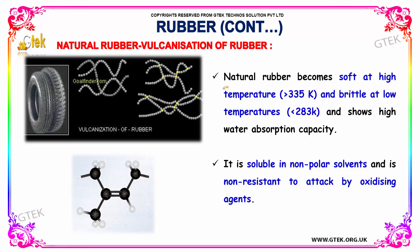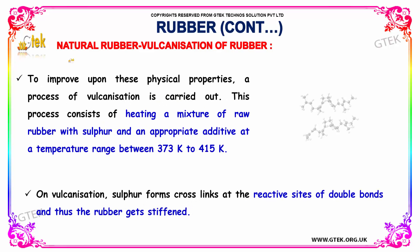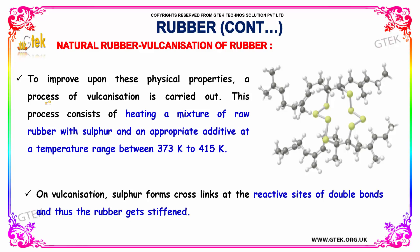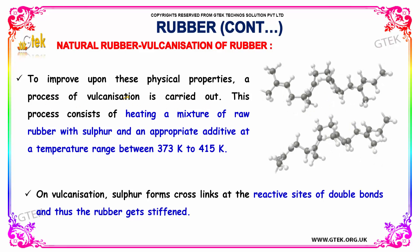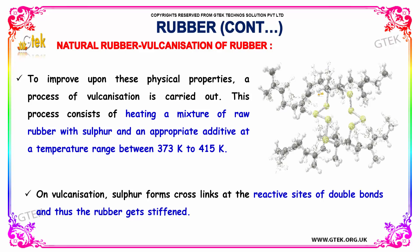Natural rubber becomes soft at high temperatures, approximately greater than 335 Kelvin, and becomes brittle at lower temperatures, below 283 Kelvin. It shows high water absorption capacities, is generally soluble in non-polar solvents, and is non-resistant to attack by oxidizing agents. To improve upon these physical properties, a process of vulcanization is carried out.